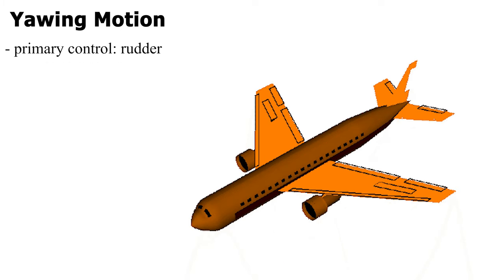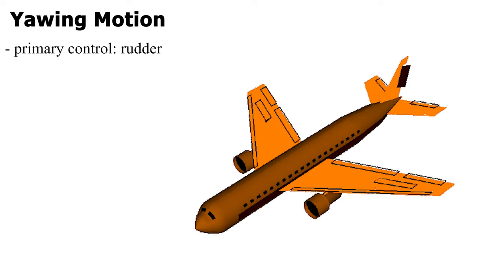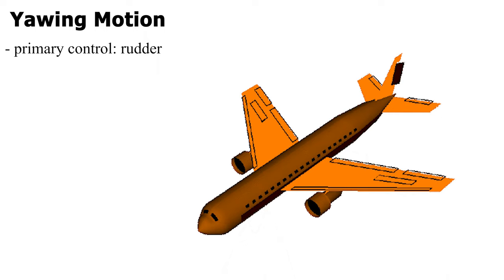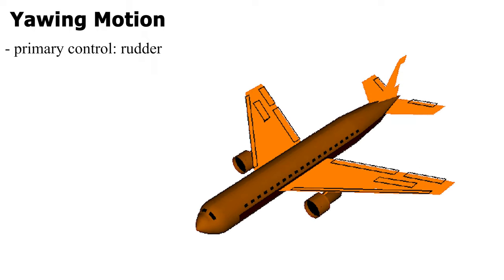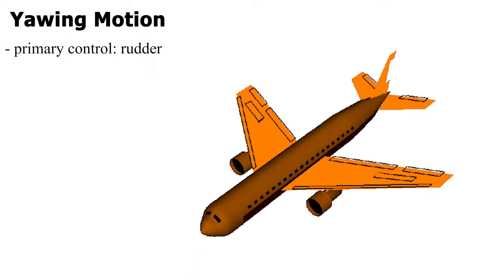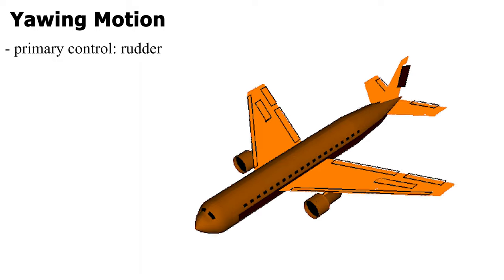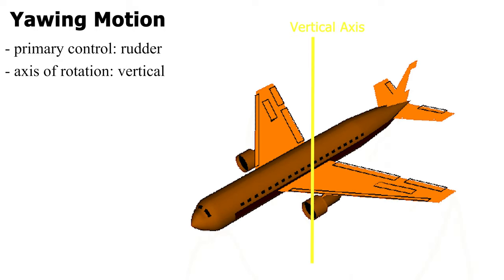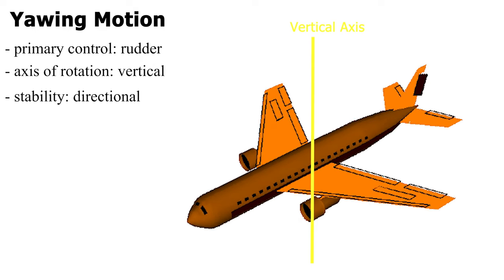The third and final primary control surface is the rudder. A rudder is a flat sheet of material attached to the aircraft's tail like so. The airplane's movement that the rudder generates is yawing. A yaw motion is a side-to-side movement of the aircraft's nose as shown in this animation. The yawing motion happens along the vertical axis. This imaginary vertical line passes through the aircraft's center of gravity. Rudder provides direction stability of the airplane through this yawing movement.